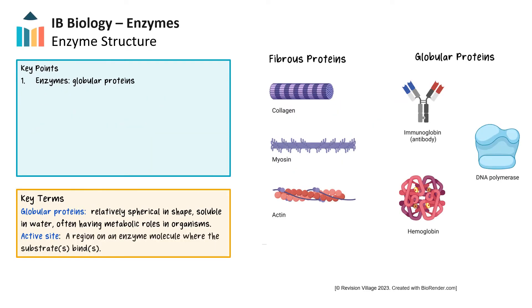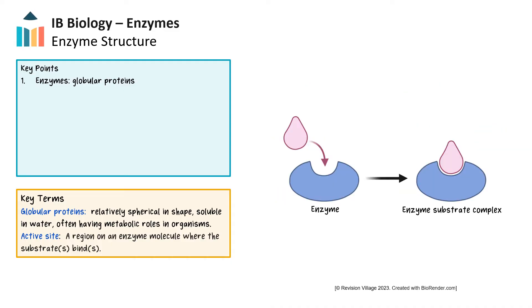Enzymes are globular proteins. Globular proteins are rounded in shape in contrast to fibrous proteins, which are long and linear. Enzymes contain a specific region called the active site, which is a crevice within the protein where the substrate binds. The active site has a complementary shape to the substrate, and as a result, there's enzyme substrate specificity, where each enzyme only reacts with one unique substrate.